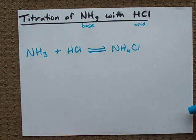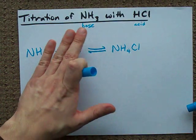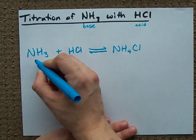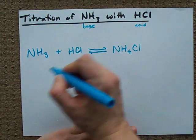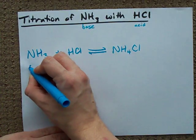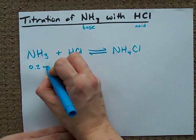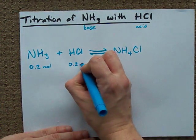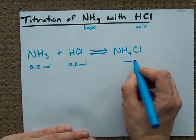The deal is, at the equivalence point of this reaction, you're going to have none of this left and none of this left, because that's what the equivalence point is. Let's say we start with 0.2 moles of this and 0.2 moles of this. We obviously don't start with any of this.